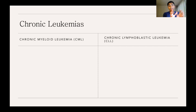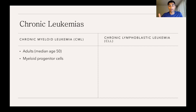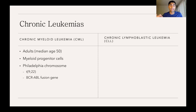Now moving on to the chronic types — those that develop more slowly over time — starting with the myeloid leukemias: chronic myeloid leukemia, abbreviated CML. CML occurs mainly in adults, with a median age of diagnosis of 50. It's characterized by increased proliferation of myeloid progenitor cells. The hallmark is the Philadelphia chromosome — a translocation between chromosomes 9 and 22 — which creates the BCR-ABL fusion gene, a mutated, unregulated tyrosine kinase that drives the abnormal proliferation seen in CML.